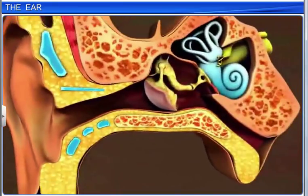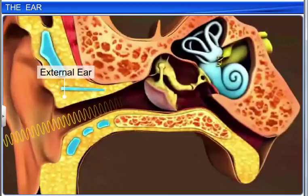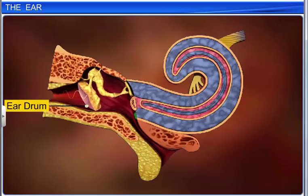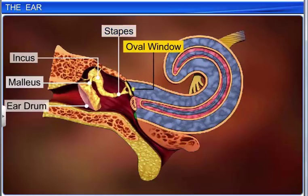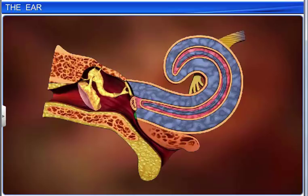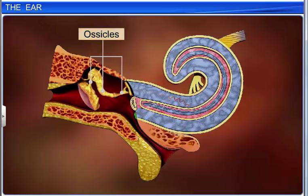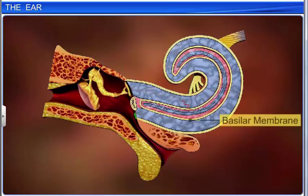Now we'll see how the ears enable us to perceive sounds. The external ear receives sound waves and directs them to the eardrum. The eardrum vibrates in response to sound waves and transmits them through the ear ossicles — the malleus, incus, and stapes — to the oval window. The ossicles in turn amplify the sound and pass the vibrations through the oval window to the fluid of the cochlea. This generates waves in the lymph that induce a ripple in the basilar membrane.